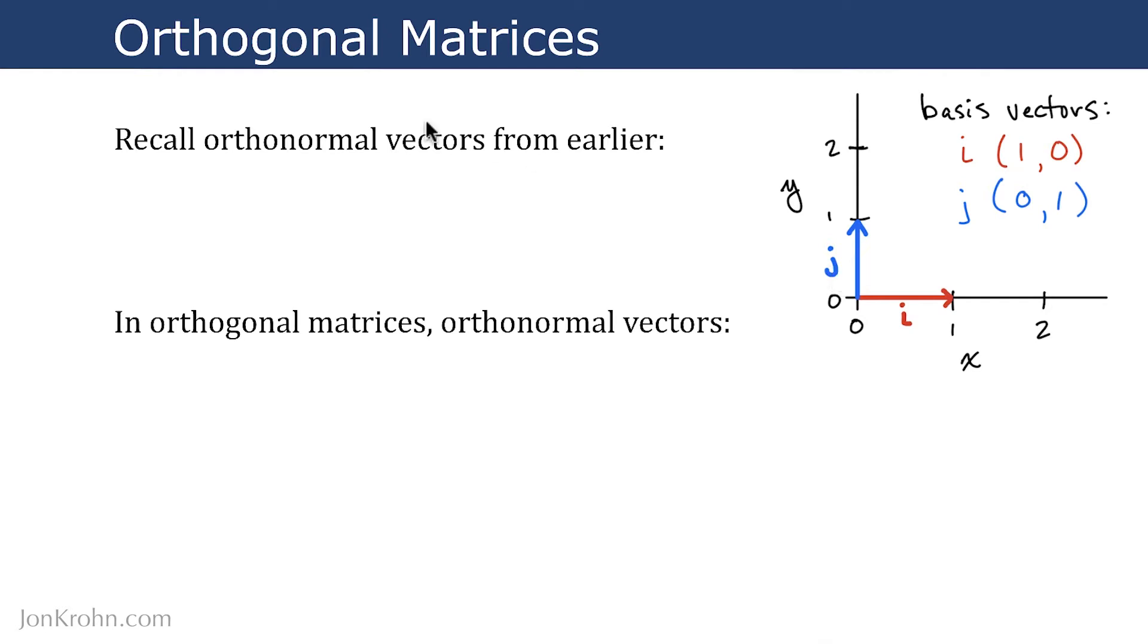In orthogonal matrices, orthonormal vectors, like basis vectors, make up all rows and make up all columns. So an orthogonal matrix is made up entirely of orthonormal vectors.